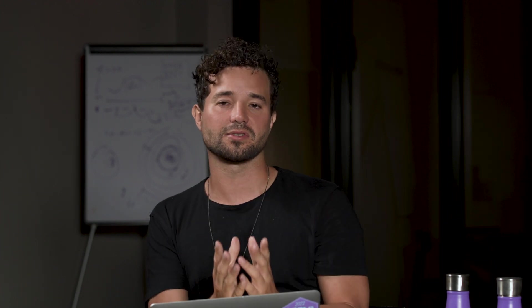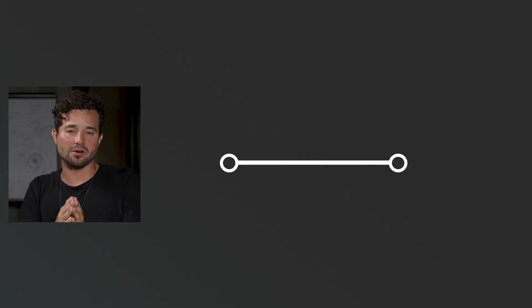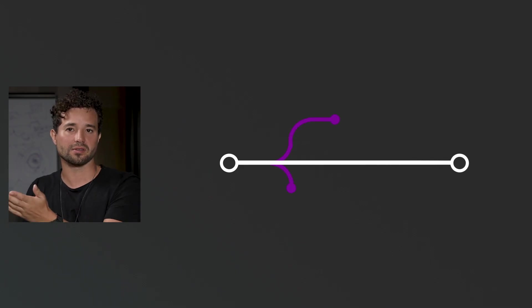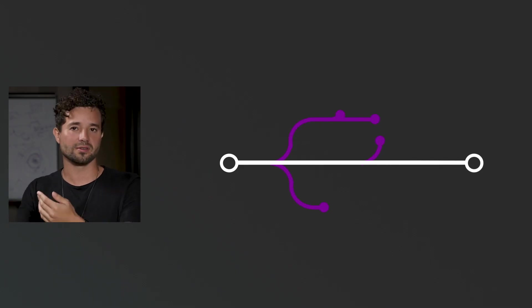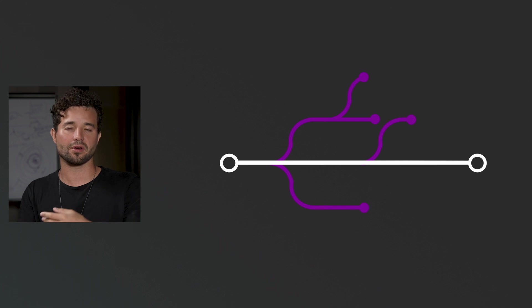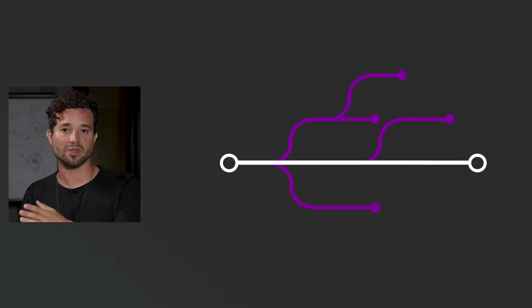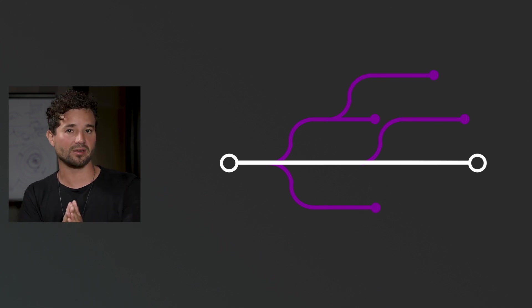Keep your original highway pristine and then create your other branches to explore ideas. Go nuts and do whatever you want, break your code, whatever. And if it works, then go ahead and merge it back. If it doesn't work, kill the branch and move on.